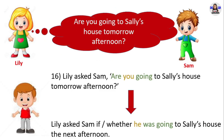Next example: 'Are you going to sell his house tomorrow afternoon?' Lily asked Sam 'Are you going to sell his house tomorrow afternoon?' in direct speech. In reported speech, Lily asked Sam if he was going to sell his house the next afternoon. This is a yes/no question, so we need to use either 'if' or 'whether.' 'Are going to' in present simple changes into 'was going to.' Pronoun 'you' changes into pronoun 'he.' The time expression 'tomorrow afternoon' changes into 'the next afternoon.'